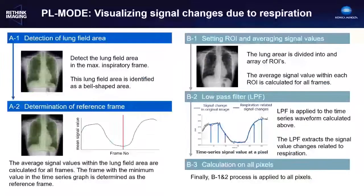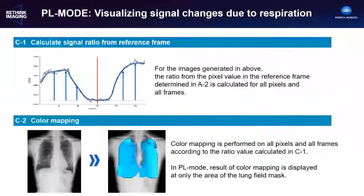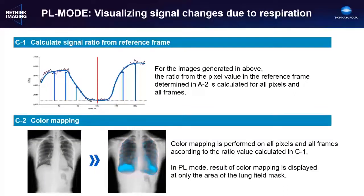In an analogous way, we can extract the data over the respiratory cycle. We create a reference frame corresponding to maximum inspiration, bandpass filter over the respiratory cycle, and apply this bandpass filter to the signal change in the array of ROIs throughout the lung area. We can then create a color map of attenuation changes between the reference image and each individual frame.